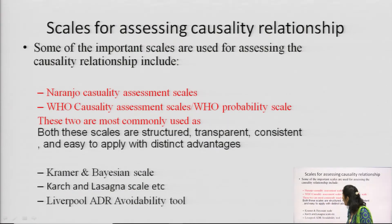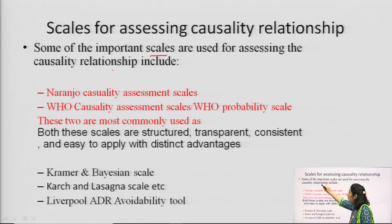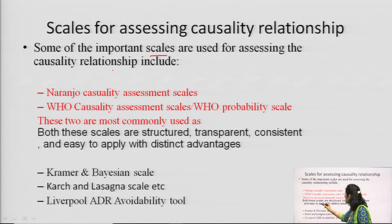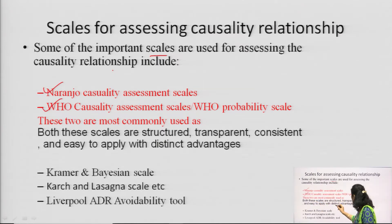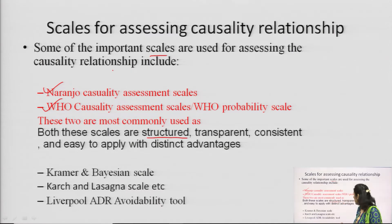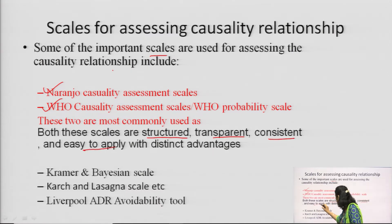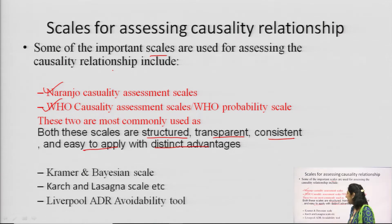The important scales used for assessing causal relationship include the Naranjo scale and the WHO causality assessment scale. Both of these scales are structured, transparent, consistent, and easy to apply, with distinct advantages. Other scales include Kramer scale, Karch and Lasagna scale, and the Liverpool ADR Avoidability scale.